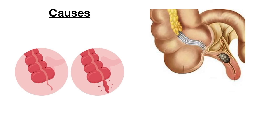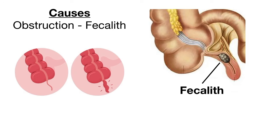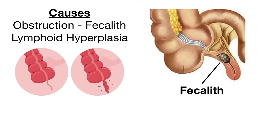Typically appendicitis is caused by some kind of obstruction. The most common type of obstruction is a fecalith — a piece of stool that gets stuck in the appendix. Another cause of obstruction is lymphoid hyperplasia. The appendix contains lymphoid follicles, which are dense collections of lymphocytes. During adolescence, the lymphoid follicles can grow in size and this growth can sometimes obstruct the appendix, which can lead to appendicitis.